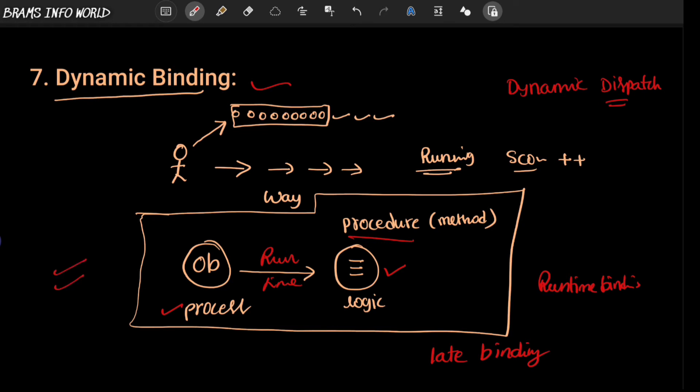This dynamic binding in OOP concept is associated with polymorphism as well as inheritance. In Java language we have dynamic method dispatch, and in C++ we have virtual functions.